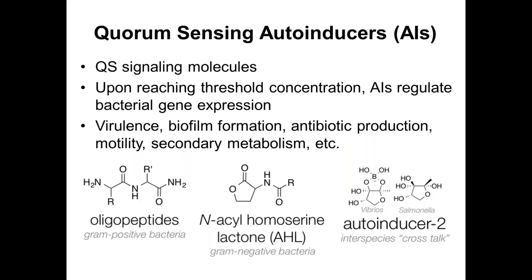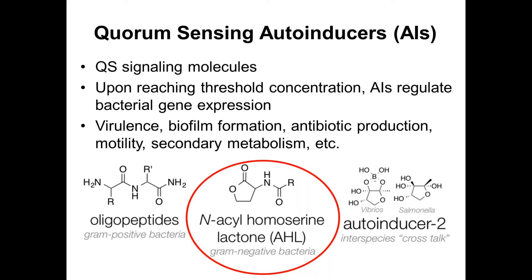So what are these autoinducers? They're the quorum sensing signaling molecules that, upon reaching some extracellular threshold concentration, bind to cells and regulate bacterial gene expression. Quorum sensing and autoinducers control a large variety of behaviors in bacteria, including virulence, biofilm production, antibiotic production, and other more complex behaviors. Today I'm going to focus on the acyl homoserine lactones, which essentially look like a homoserine lactone ring with an acyl chain of varying lengths. I'll look at these because they are produced by a lot of known pathogens.